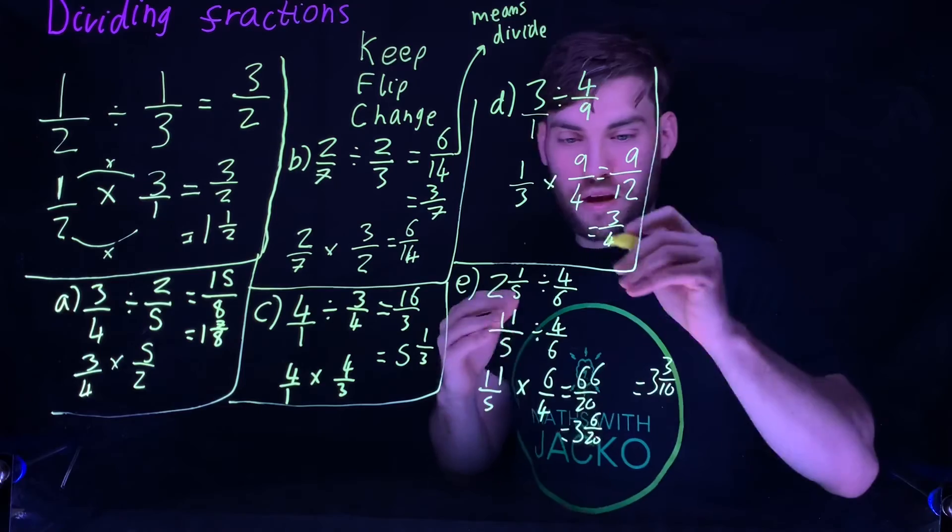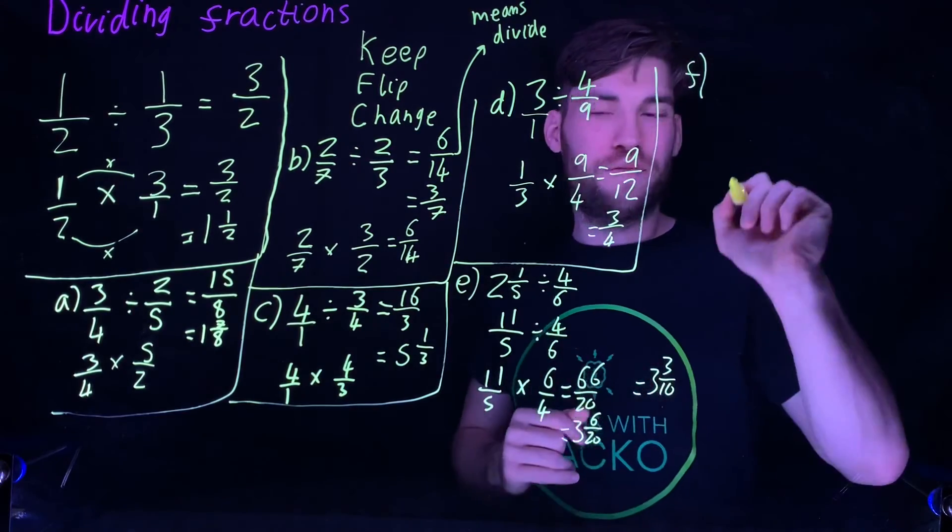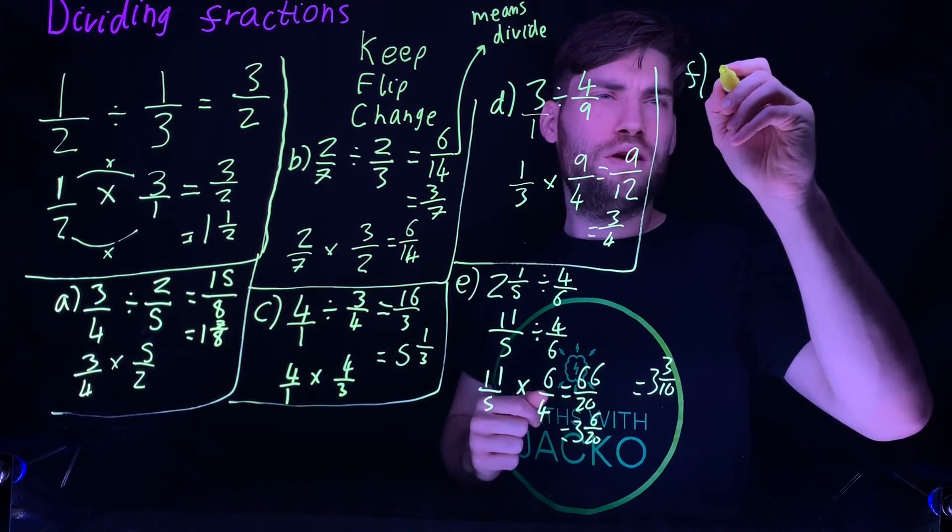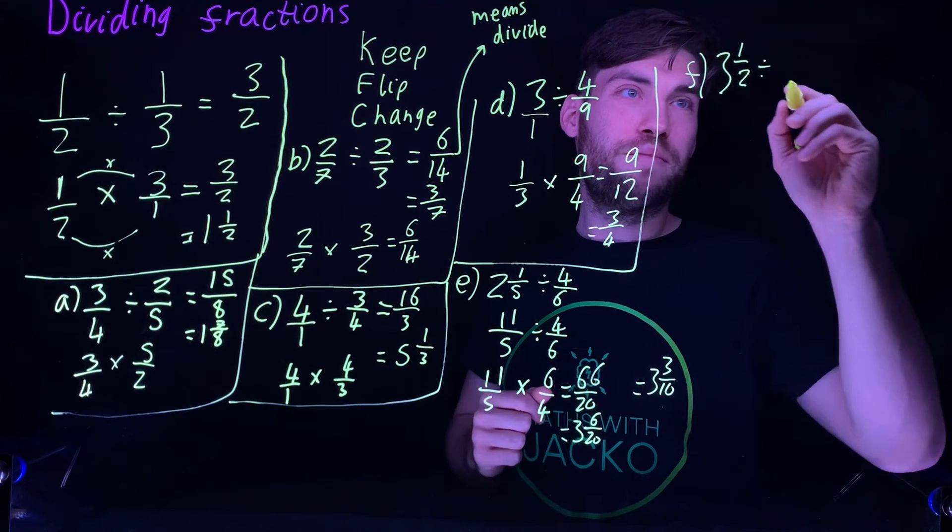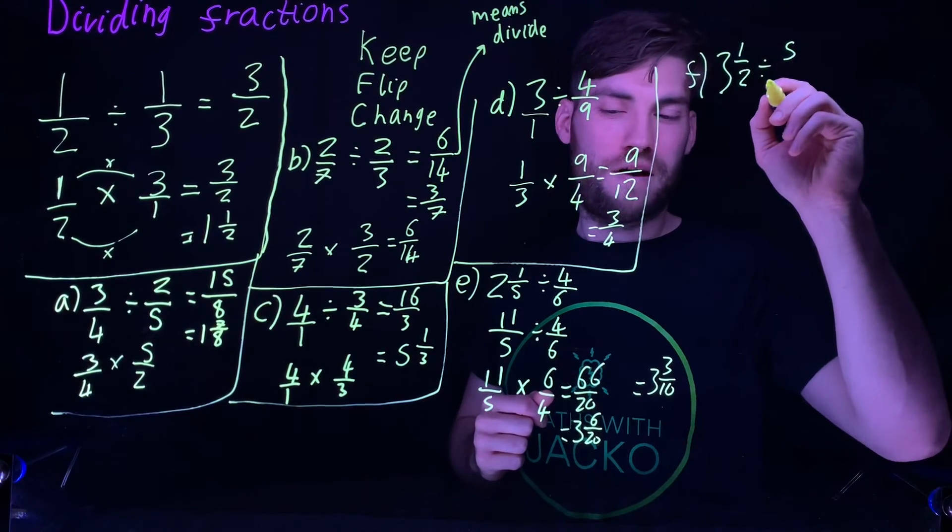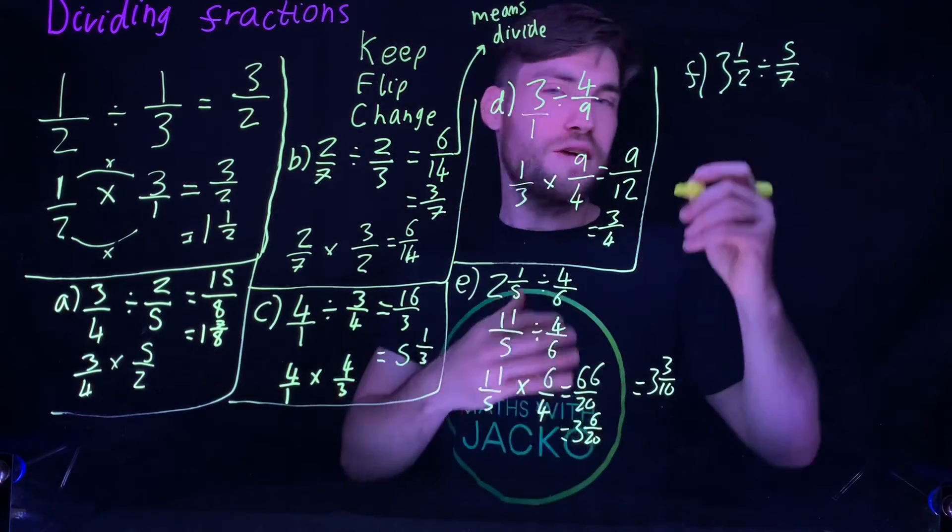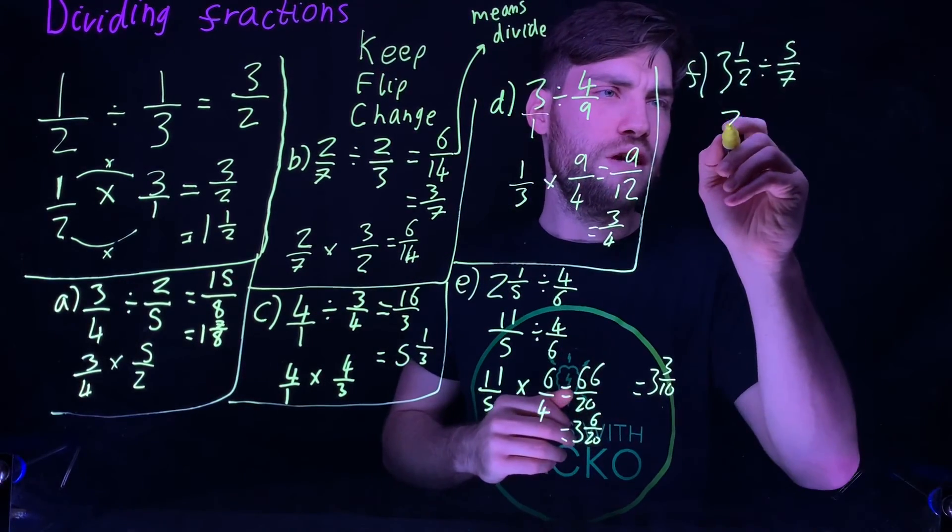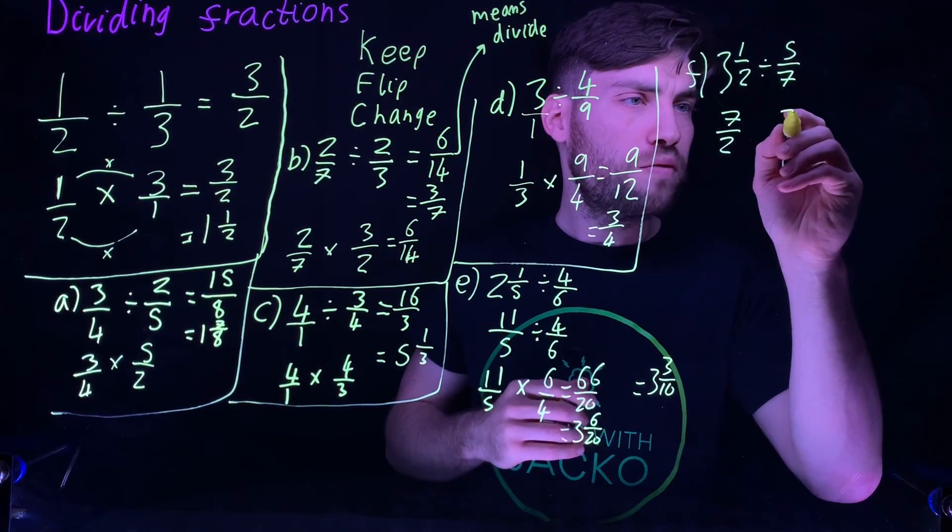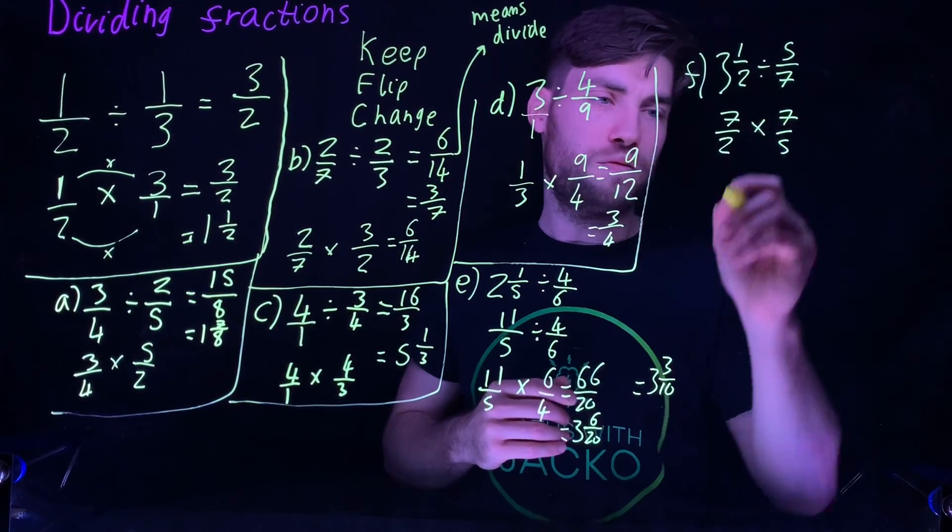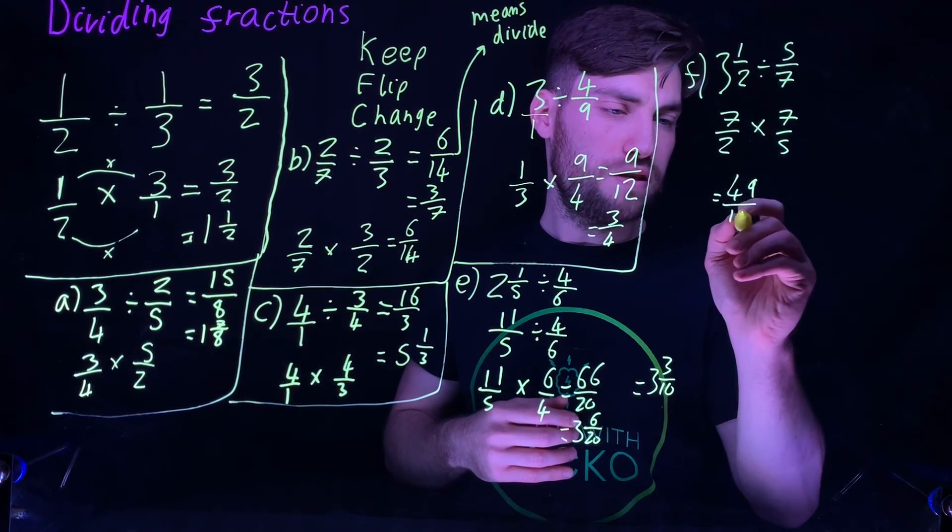Last one, have a go at this question F. Let's say we've got three and one half divided by five sevenths. Pause the video and have a go. Convert your mixed number first, so that'll be seven over two, seven halves. Flip the other one, seven fifths. Change to multiply. Seven times seven is forty-nine over ten, which simplifies to four and nine tenths.